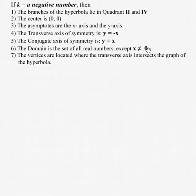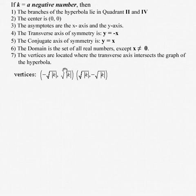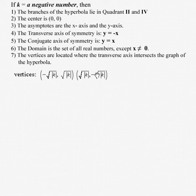The domain is still the set of all real numbers, where x is not equal to 0. The vertices are located where the transverse axis intersects the graph. The first vertex is at (−√|k|, √|k|), and the second vertex is at (√|k|, −√|k|).